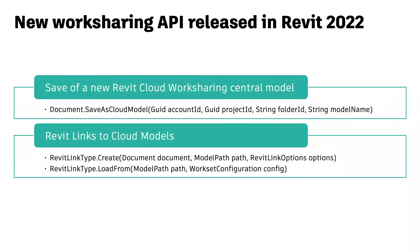Two new worksharing APIs are released to support the automatic workflow in Revit 2022. First, Save As Cloud Model now supports saving a new Revit Cloud Worksharing Central model. Second, the Create and Load Flow methods have been enhanced to support the creation of new cloud module Revit links.